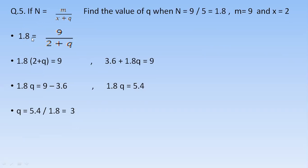2 plus q is divided by 9. 9 upon 2 plus q. Remember, when the 2 plus q is the denominator of 9, 2 plus q is the denominator of 9, so it is divided by 9. It will move towards 1.8, so it will multiply by 1.8.